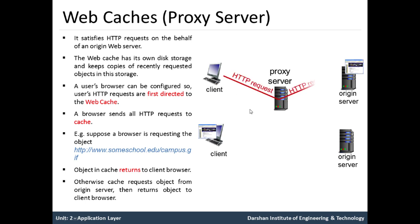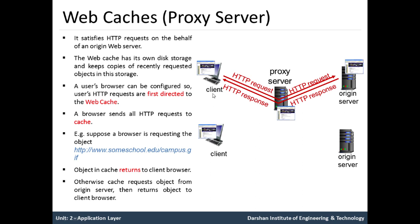Let's see how it works. A browser establishes a TCP connection to the Web Cache and sends an HTTP request for an object to the Web Cache. The Web Cache checks to see if it has a copy of the object stored locally. If it does, the Web Cache returns that object within an HTTP response message to the client browser.